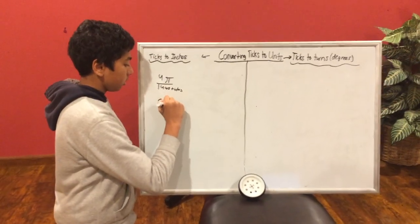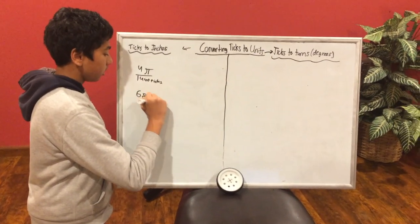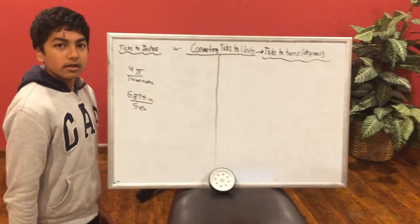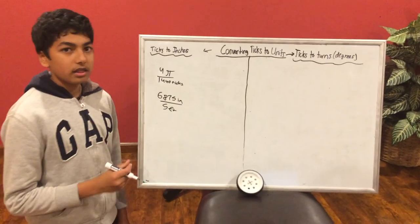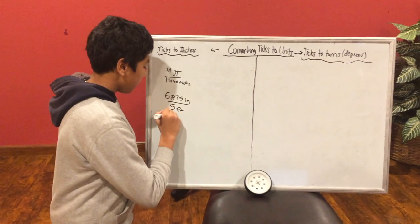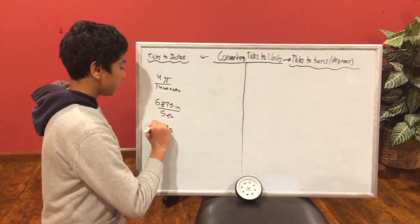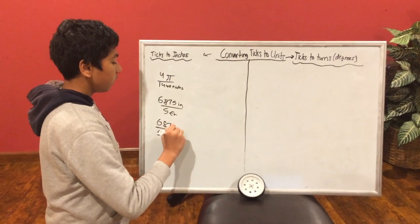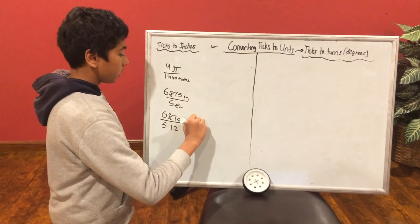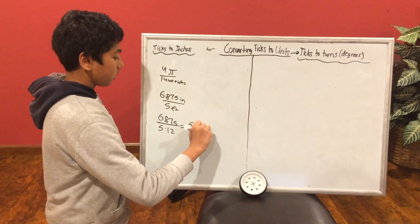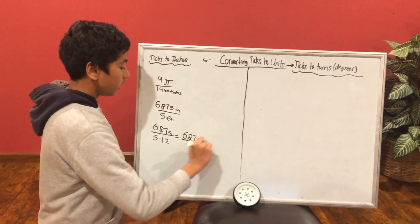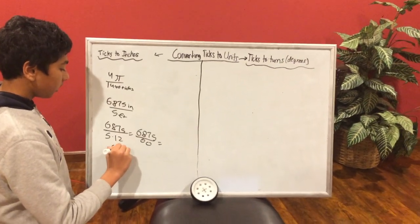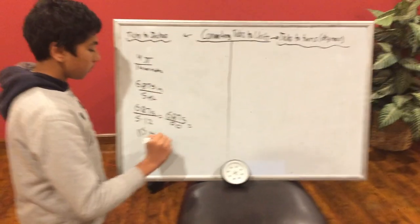So if we want to find the amount of inches, the math is simple. All we do is 6875 divided by 5 times 12, which should give you 115 ticks per inch.